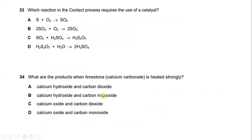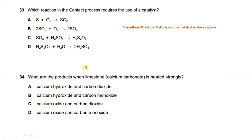Which reaction in the contact process requires the use of a catalyst? Looking at options A, B, C and D, the reaction in the contact process is: 2SO2 + O2 → 2SO3. In this process, vanadium oxide V2O5 is used as a catalyst.